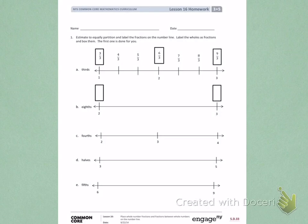So on letter A, they had to partition each section of the number line into thirds. 1 is labeled as 3 thirds, 2 is labeled as 6 thirds, and 3 is labeled as 9 thirds. Those are the whole numbers, so we put boxes around them.